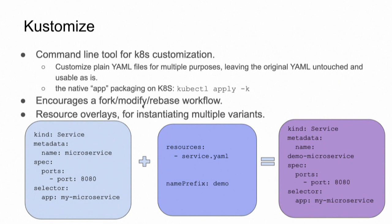There is another project now integrated into kubectl by default — Kustomize — which is the default customization adopted by the Kubernetes community. Kustomize is a command line tool for Kubernetes customization. It uses YAML files to deploy our application. You will have a base directory containing all the common configuration for your cluster, and then overlays with directories for each environment — local development, remote development, staging, production, and so on. The merge of these two configurations gives the final configuration file that will be deployed into your cluster.